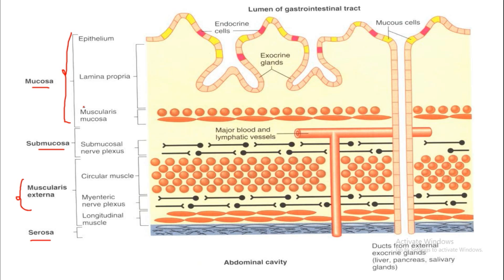Within the mucosa there is a muscularis mucosa containing smooth muscle. Inside the muscularis externa there are two types of muscle: the inner layer is the circular muscle and the outer layer is the longitudinal muscle. There are two nerve plexuses: the submucosal plexus located in the submucosa, and the myenteric plexus located between the circular and longitudinal smooth muscle layers in the muscularis externa. The submucosal plexus is also known as Meissner's plexus.